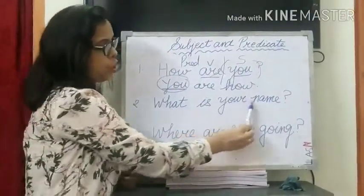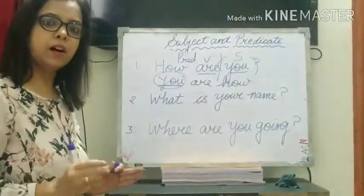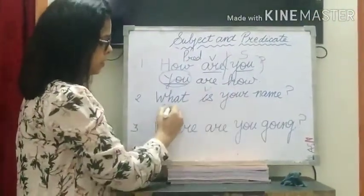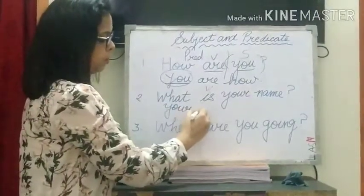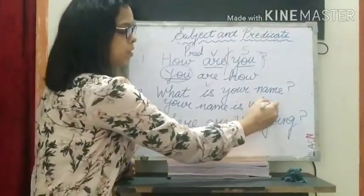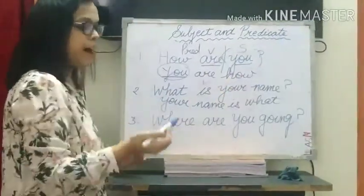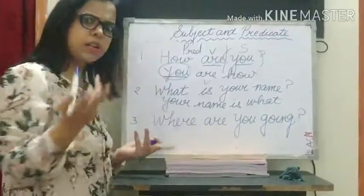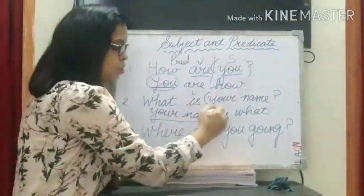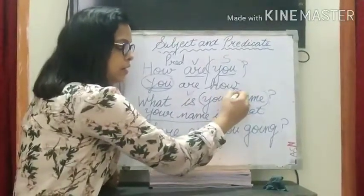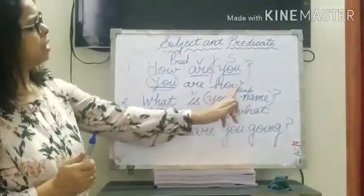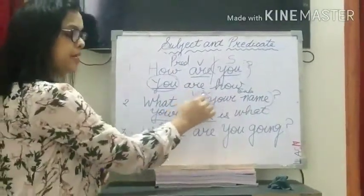'What is your name?' — let's rephrase the sentence again. 'Is' is the verb. If I write 'Your name is what?' and ask the question — what is what? — the answer coming is 'your name is what'. So 'your name' is the subject. Here again, the subject is coming after the predicate.